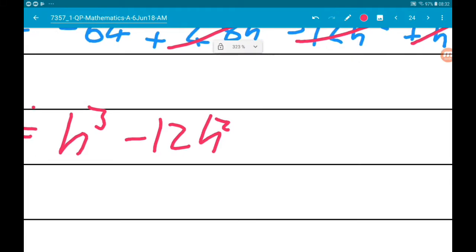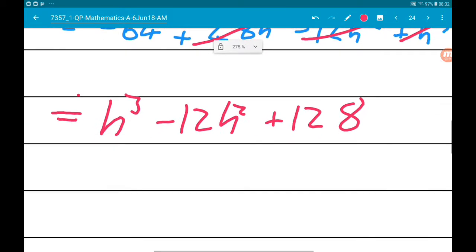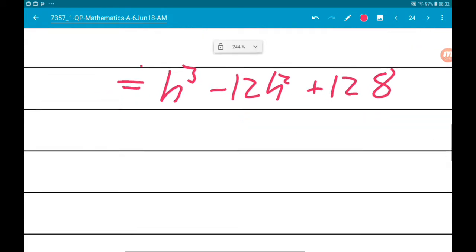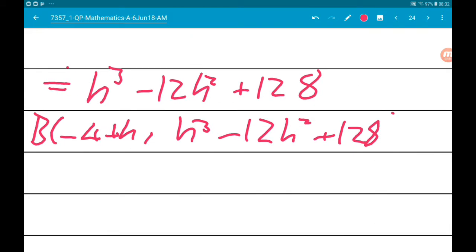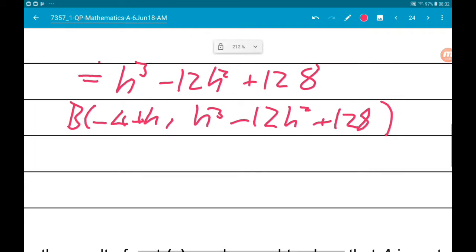So now we know that point B has coordinates minus 4 add h, h cubed minus 12h squared add 128.